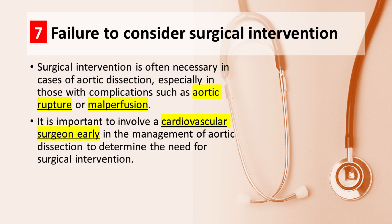Pitfall number 7: Failure to consider surgical intervention. Surgical intervention is often necessary in cases of aortic dissection, especially in those with complications such as aortic rupture or malperfusion. It is important to involve a cardiovascular surgeon early in the management of aortic dissection to determine the need for surgical intervention.